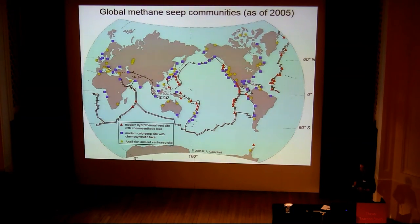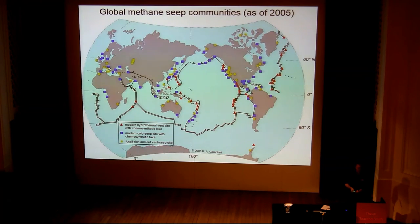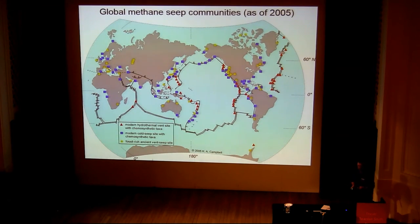Methane seeps are very common features. They're found from the intertidal zone down to beyond 7 kilometres water depth, and they occur where there are thick sequences of organic-rich sediment. That organic material is broken down by biogenic and thermogenic processes to produce hydrocarbons, including methane, which then seep up onto the seafloor at discrete sites.